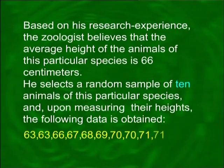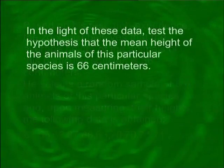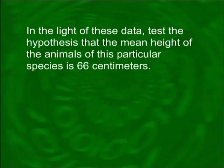He selects a random sample of 10 animals and upon measuring their heights, the data obtained includes values such as 63, 63, 63, 66, 67, and so on. In the light of these data, test the hypothesis that the mean height of the animals of this species is 66 centimeters. We approach this problem as before. This is going to be a two-tailed test because the null hypothesis is that mu equals 66 and the alternative is that mu is not equal to 66.